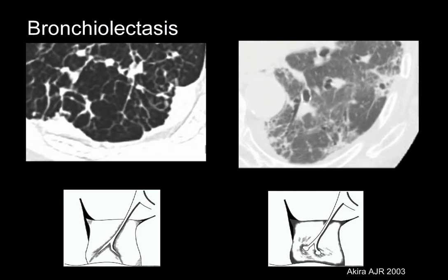Small peripheral wedge- or hump-shaped homogeneous opacities are more common in asbestosis compared to the same opacities in IPF, where the distal airways are dilated. This probably reflects differences in pathology: in asbestosis, fibrosis is centered around the small airways, obliterating their lumen, in contrast to IPF where more peripheral fibrosis results in traction bronchiolectasis of the small airways.